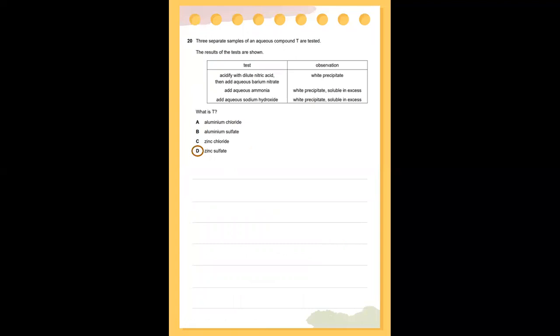Number 20: three separate samples of an aqueous compound T are tested. When acidified with dilute nitric acid, it produces a white precipitate. When aqueous barium nitrate is added, a white precipitate is produced. What is T? When aqueous ammonia is added, it becomes a white precipitate soluble in excess. And when aqueous sodium hydroxide is added, it also becomes a white precipitate soluble in excess. So, the answer for number 20 is zinc sulfate.